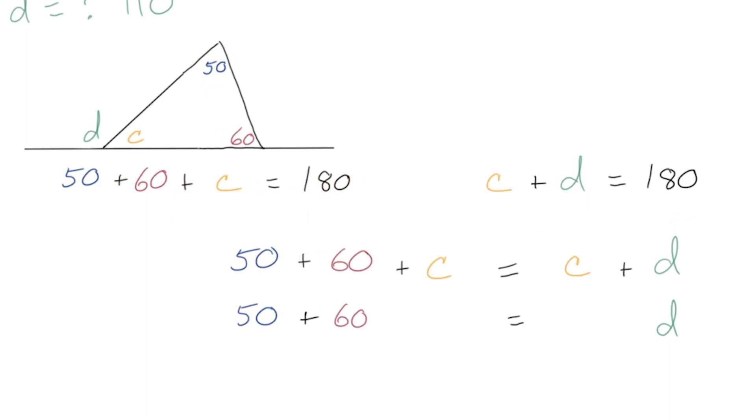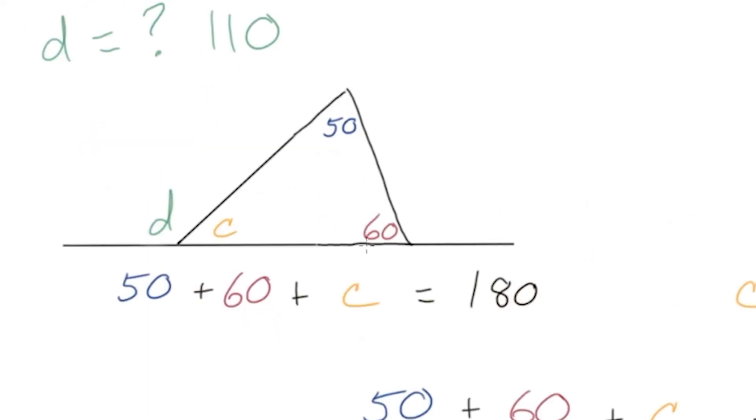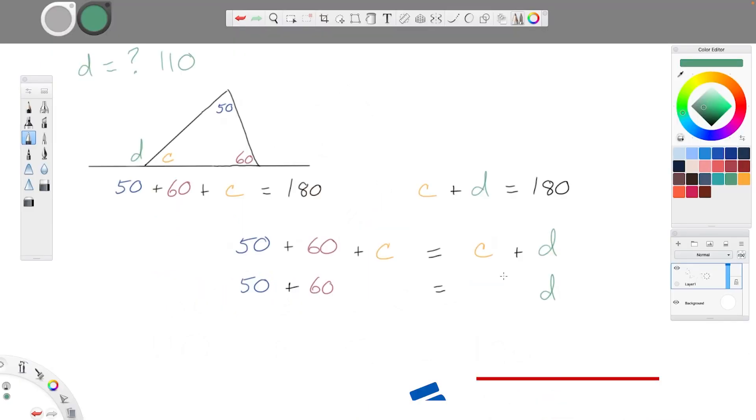So I hope you found that helpful. I know I certainly did, especially that intuition around why this is true and why it's always true. Going from the interior angles sum to 180, the straight angle sums to 180, they overlap in C, they're both equal to the same thing. That's really, for me, the crux, the core of this whole thing. Make sure to like, subscribe, share it with a friend, all that good stuff. Have a wonderful day and I will see you next time. Bye.